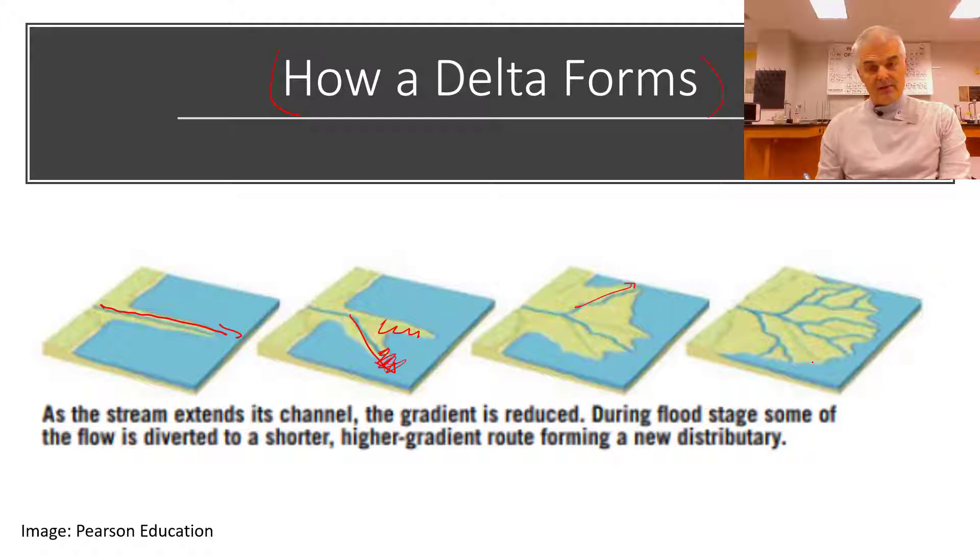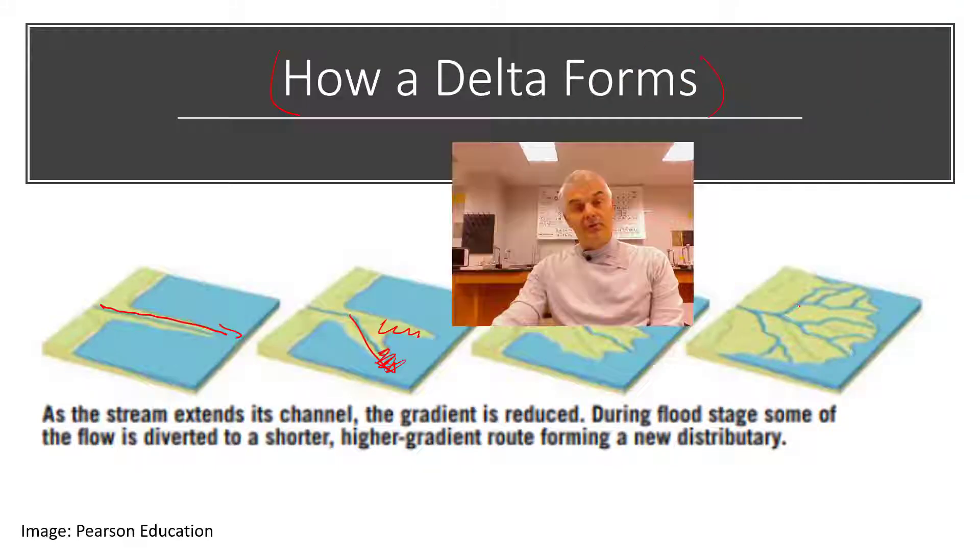The sediments create a little natural dam, and then the water has to find a new way, so it shoots out another way. That's how a delta forms.